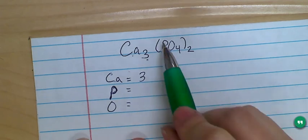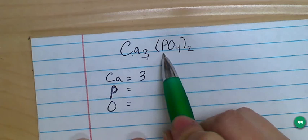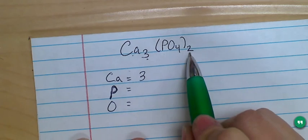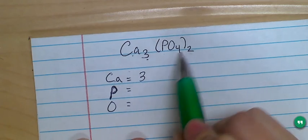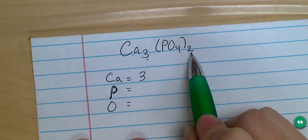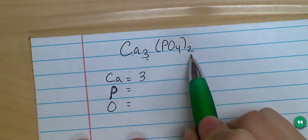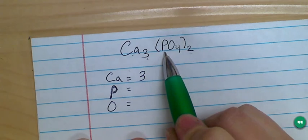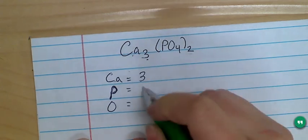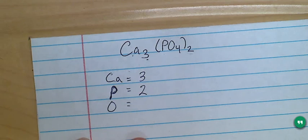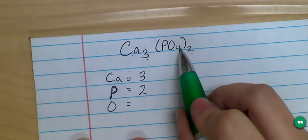In the PO4, there's 1 phosphorus, but there are 2 phosphate ions in here. That's what this subscript 2 outside of the parentheses means. I have 2 total phosphate. So I have 1 times 2 is 2 phosphorus here. And then for the oxygen, that's going to be 4 times 2, which is 8.